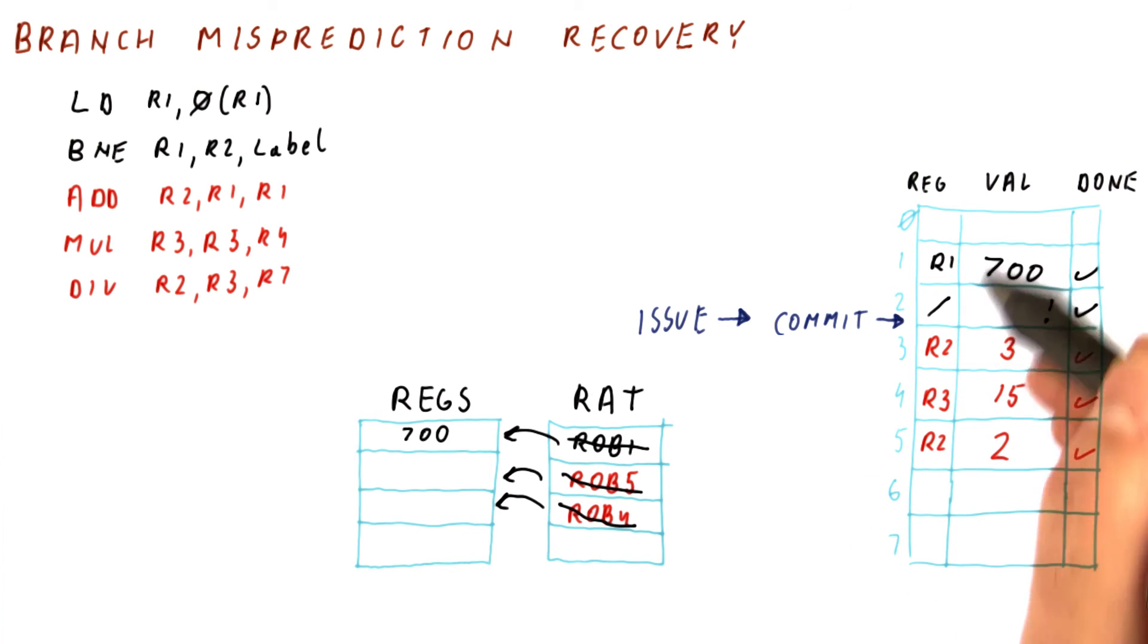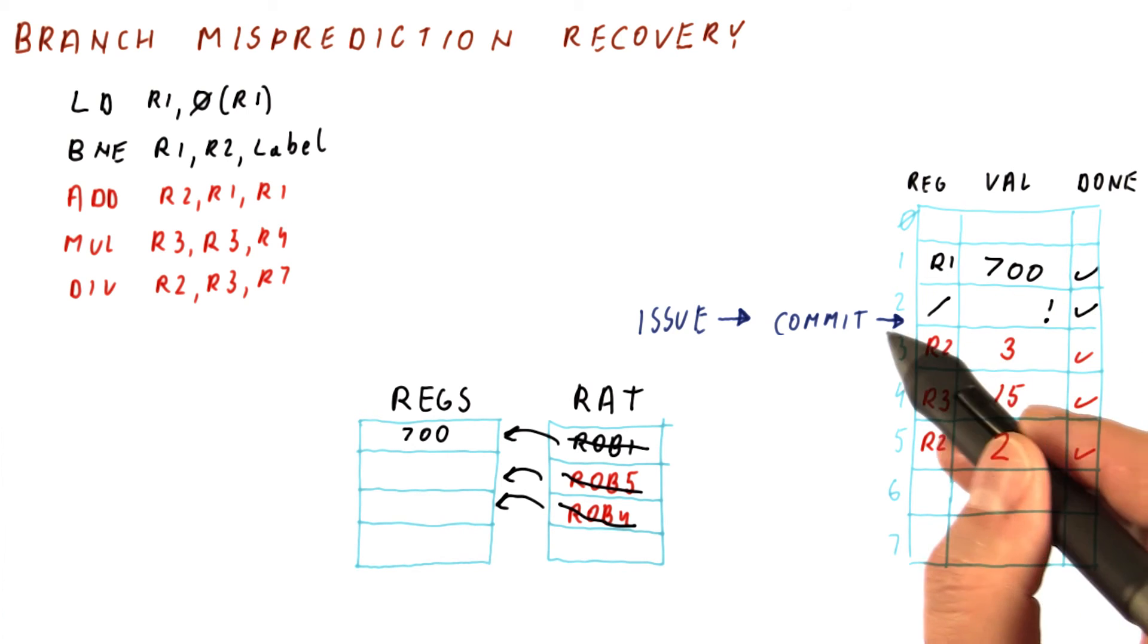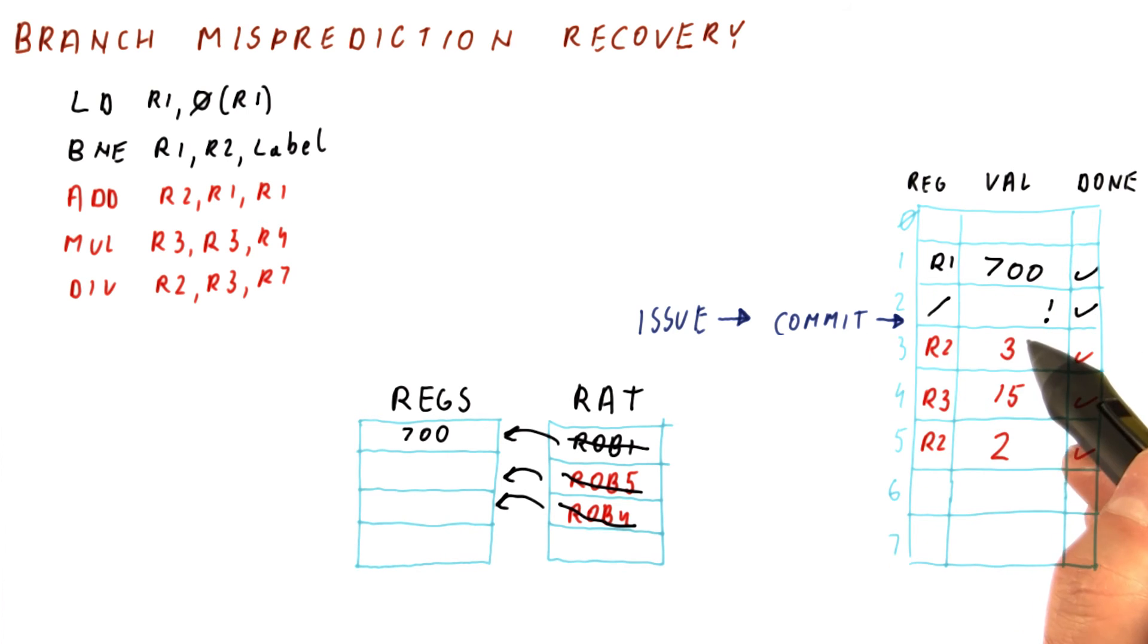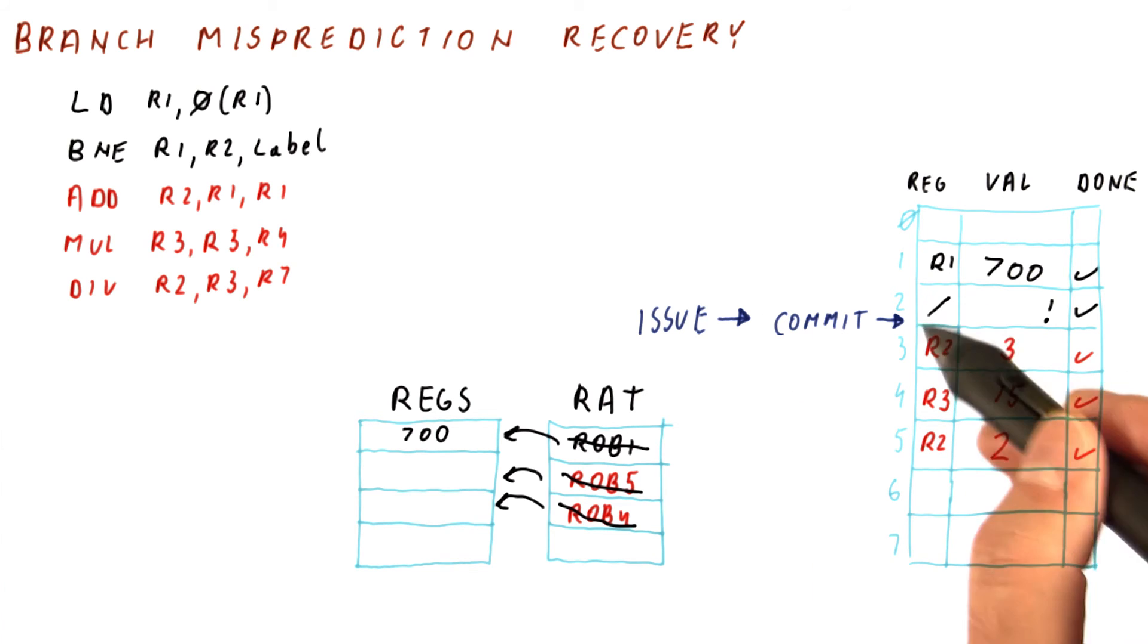As you can see, with the ROB-based processor, we can do instructions out of order, but we still can figure out what the correct order should have been if we did the right thing at the point of the branch.